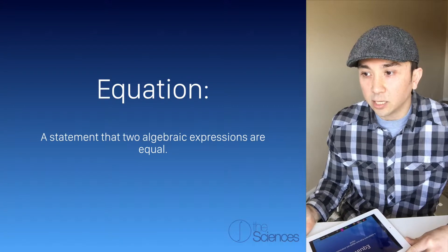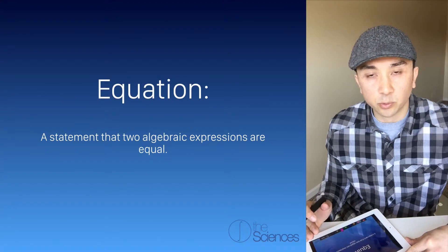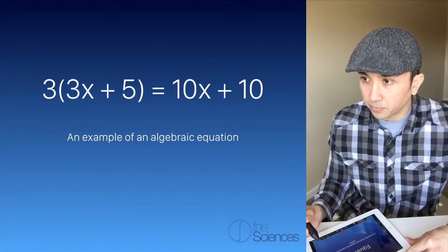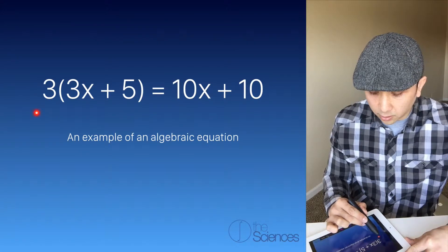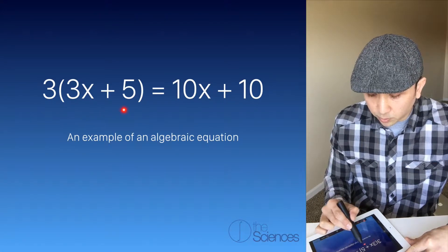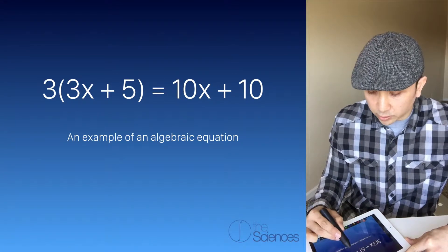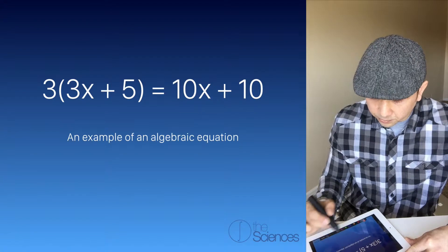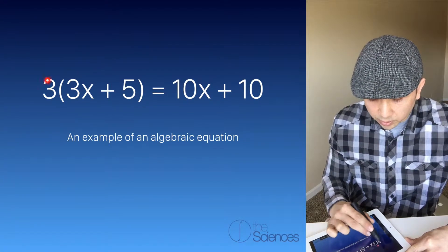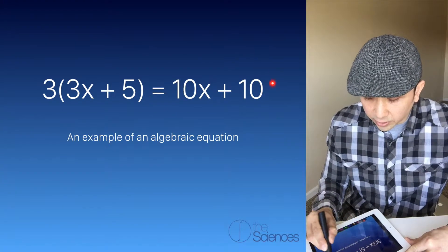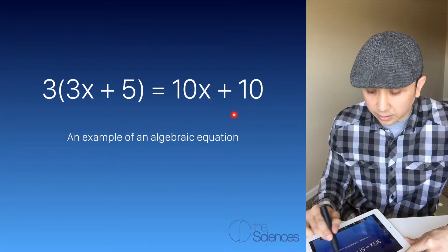So what's an equation? An equation is a statement that two algebraic expressions are equal. For example, we have the algebraic expression 3 times (3x plus 5), and another algebraic expression 10x plus 10. What this is saying is that the first algebraic expression is equal to the second — and the whole thing is an equation.